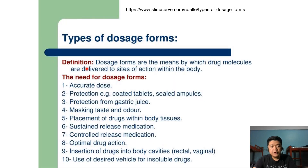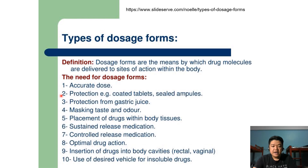Dosage forms are the means by which drug molecules are delivered to the sites of action within the body. Examples include tablets, capsules, and enteric-coated drugs. Dosage forms are important to provide an accurate dose of the drug, for protection — such as coated tablets and sealed ampules — and for protection from gastric juice in the stomach. They also mask the taste and odor of the drug, facilitate placement of the drug within body tissues, and support sustained and controlled release of medication, especially in the GIT.